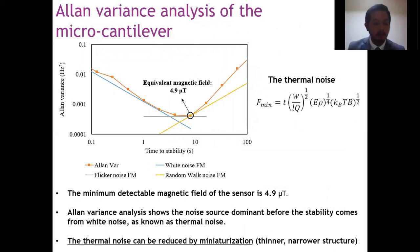Then we analyze the noise level of the sensor by the Allen variance. The minimum shift observed is about 0.02 Hz, which is equivalent to 4.5 microtesla. To improve this value, we consider what is the noise source of the sensor. It is seen by the Allen variance analysis. The dominant noise source before stability comes from the white noise, as known as thermal noise.